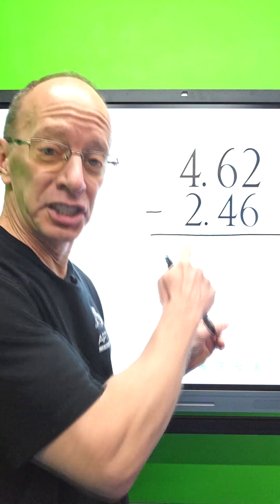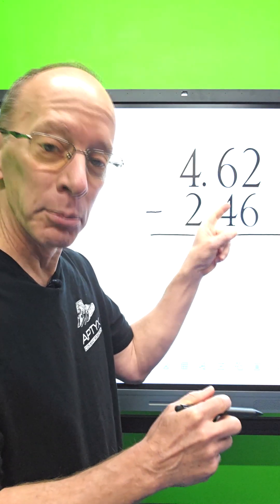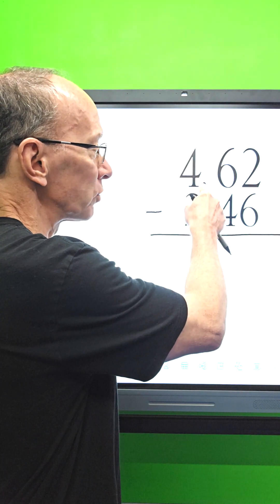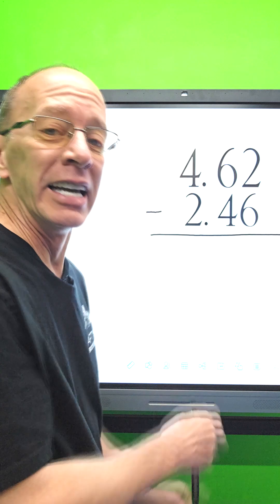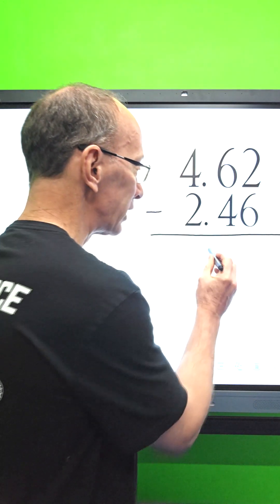Hey, are you ready for subtraction with decimals? Yeah, let's do it! First of all, you line the numbers up with the decimals. See how the decimal is right here and then the next one is right there? You've got to line them up, and then the answer is going to have a decimal in it right here. You can put that decimal in there now or later, it all depends on what you like doing.